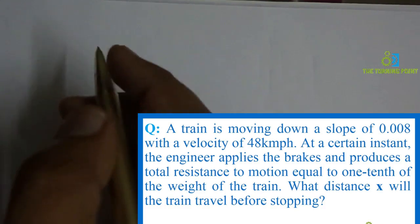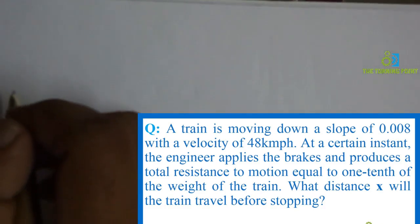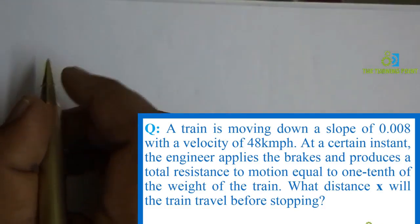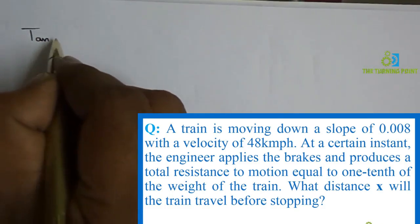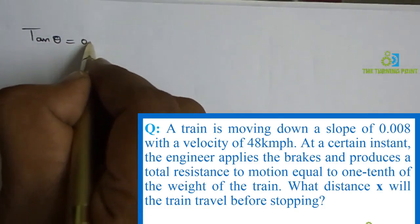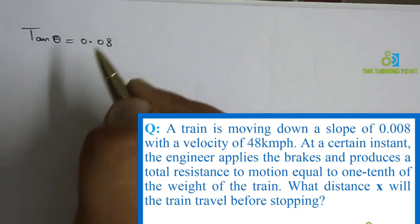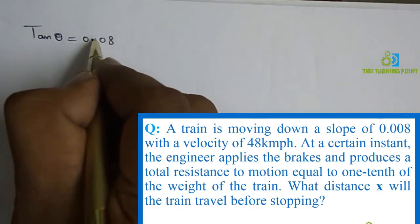A train is moving down a slope of 0.008. In terms of trigonometric relations, we can express slope in terms of tan theta. So I am writing tan θ = 0.008.